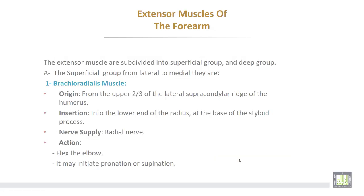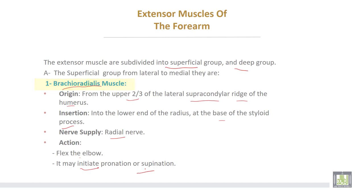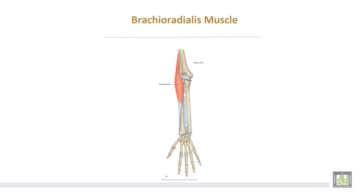The superficial group from lateral to medial: brachioradialis takes origin from the upper two-thirds of the lateral supracondylar ridge of the humerus, while the insertion is into the lower end of the radius at the base of the styloid process. Nerve supply from the radial nerve. Action: flexes the elbow; it may initiate pronation or initiate supination, holding the forearm midway between pronation and supination.